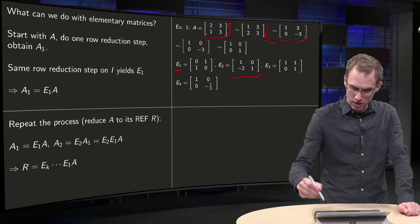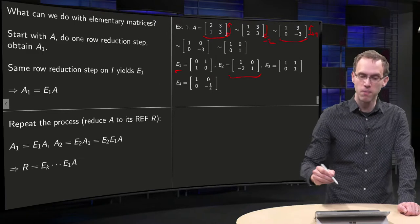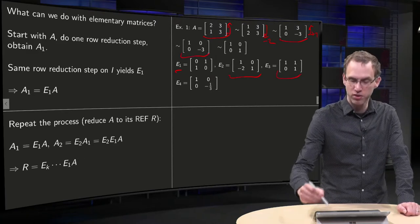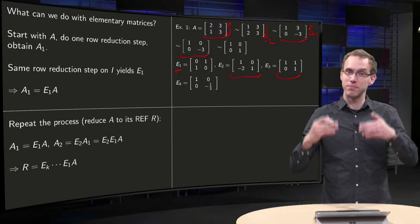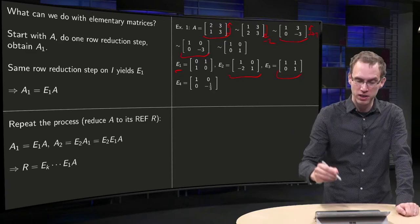Then it is convenient to add the second row one times to the first one, to simplify our matrix further. This yields our elementary matrix E3, which is also obtained by adding the second row once to the first row of the identity matrix.